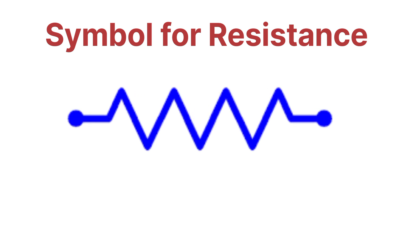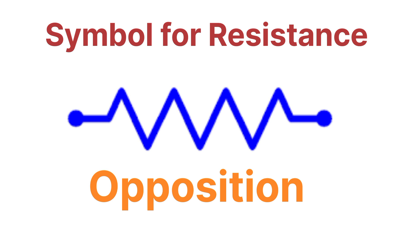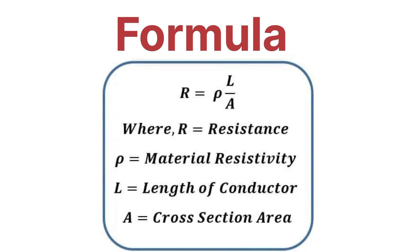Now let's see what is the symbol for resistance. The symbol for resistance looks like a zigzag, to show the opposition offered to the flow of electric current. So generally we represent resistance with a zigzag symbol.